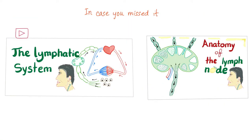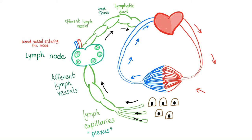In my last two videos we talked about the lymphatic system as well as the anatomy of the lymph nodes, so don't forget to watch those. Here is a quick review: heart, arteries, capillary bed. Some fluid is lost in the interstitium during exchange with the cell, and this fluid is going to be picked up by lymph capillaries or lymph plexus — afferent, lymph node, efferent, lymph trunk, then lymph ducts, then back to the veins.